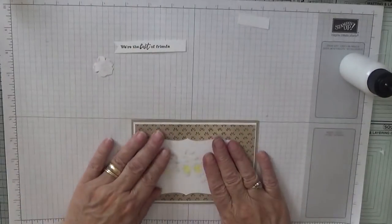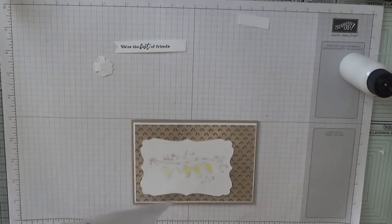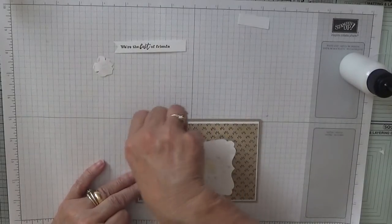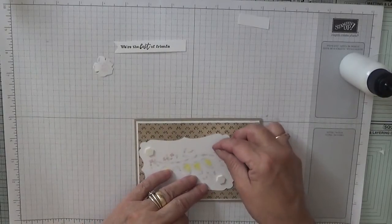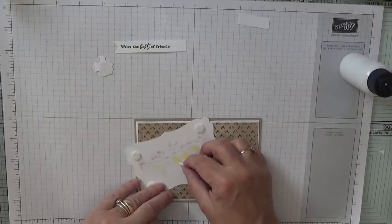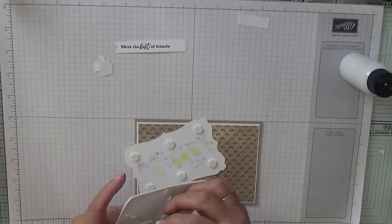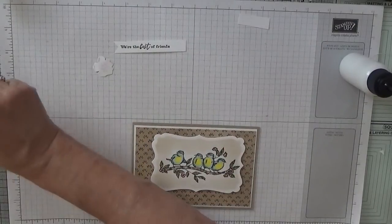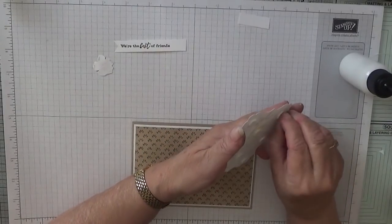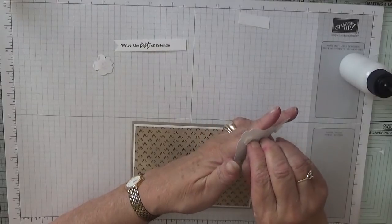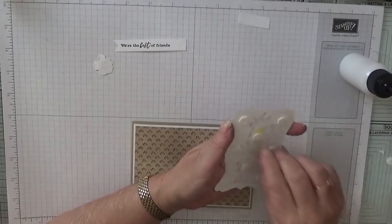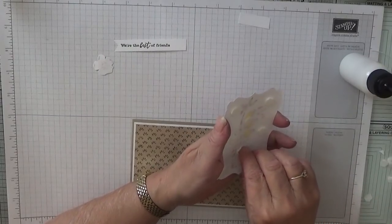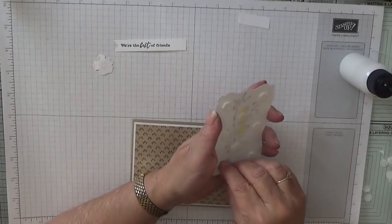I think this is the negative side whereas all them flowers is the positive side. Right, this we're going to pop up on dimensionals. And I'm going to get messages - you're putting too many dimensionals. It's my card. Some people only put like two or three on a side a bit this size - now I don't want it to sag.